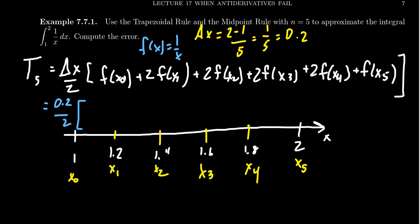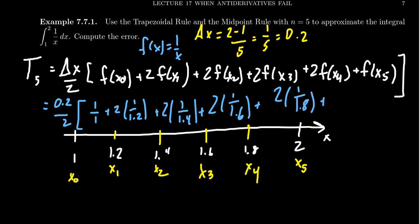So we need to take here 1 over 1, that's of course a 1. We need to take 2 times 1 over 1.2 plus 2 times 1 over 1.4 plus 2 times 1 over 1.6 and then 2 times 1 over 1.8. And then make sure you take only 1 times 1 over 2 which is one half.